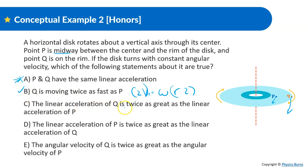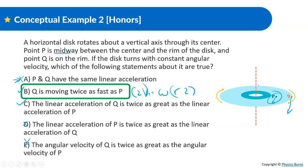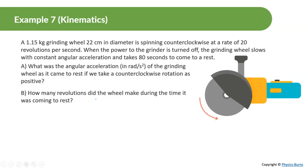Option C: the linear acceleration of Q is twice as great as that of P. Q is twice as far, so the radius is twice as much — that checks out. Option D: the linear acceleration of P is twice as great — no, P would be smaller. Option E: the angular velocity of Q is twice as great — no, angular velocity is the same for both. So the answer is B: Q is moving twice as fast as P. You might wonder why not C — because the disk turns with constant angular velocity, meaning alpha equals zero, so tangential acceleration is zero for both.